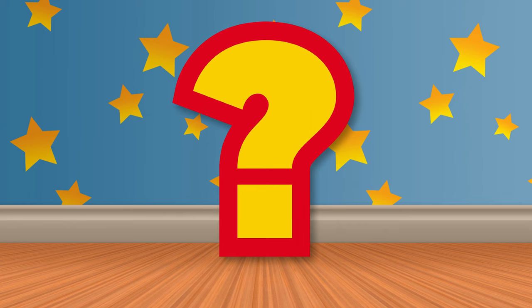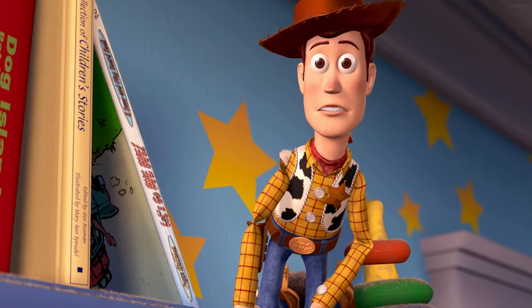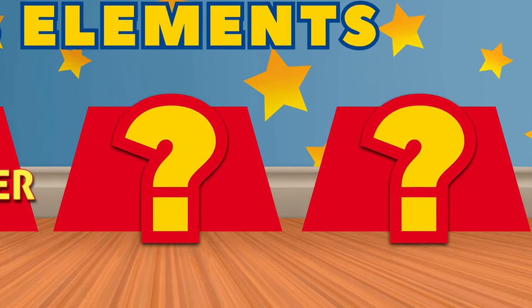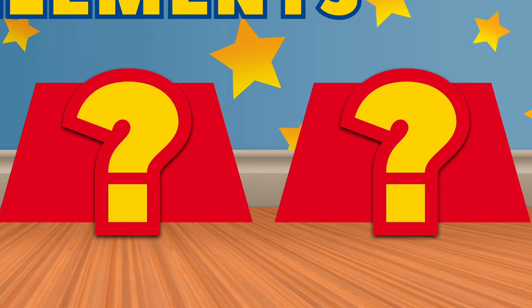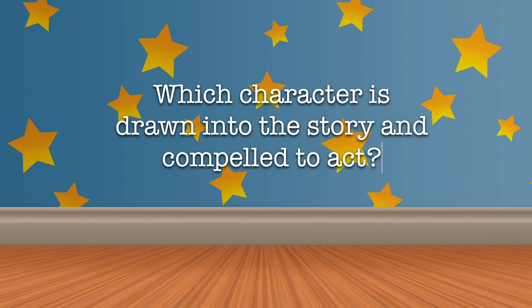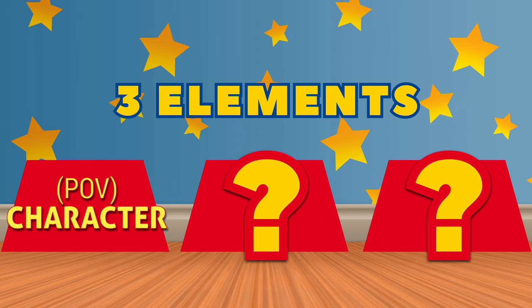Why? Because we want to identify with someone on the screen and share their experience, but foremost, because we need the POV to define the other two concept parts. Find the POV character by asking, through whose eyes do we experience the story, or which character is drawn into the story and compelled to act. In our clip, Woody is clearly that. That's one out of three done.